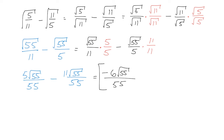That's a lot of steps, but this is why algebra is so important — it builds on so many things. In this problem we used the property of splitting radicals, rationalizing the denominator by multiplying by root 11 over root 11 and root 5 over root 5, finding a common denominator for the fractions, and subtracting like terms in the numerator. Let's do one last one.